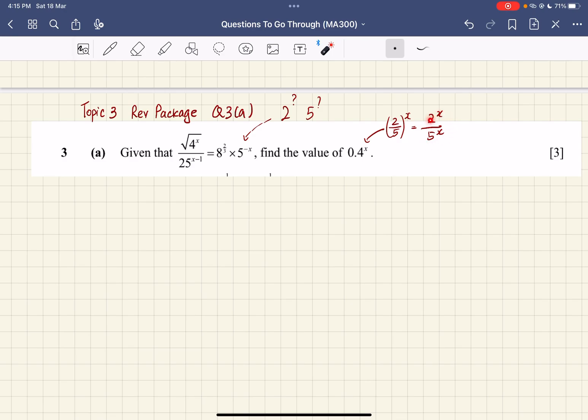So 0.4^x can be written as 2^x over 5^x. It will mean that when you're solving this equation, your endpoint has to be 2^x over 5^x equals to some numerical value, some constant. That is what we are trying to achieve.